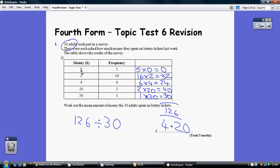So 5 times no money was spent, 16 times £2 was spent, 6 times £4 was spent, etc. So how much money was spent?